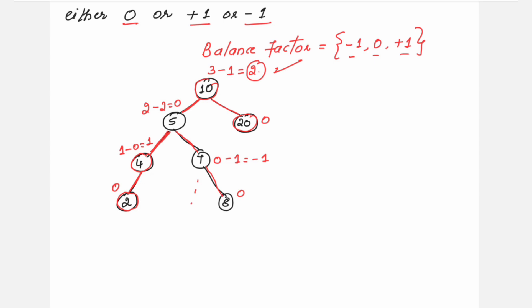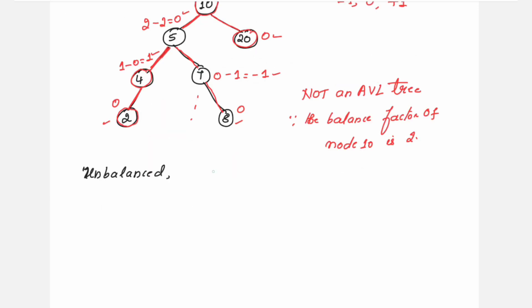Looking at this tree: for node 2 it is 0 — acceptable. For node 8 it is 0 — acceptable. For node 7 it is minus 1 — acceptable. For node 5 it is 0. For node 20 it is 0. When you see a tree wherein a node does not have a balance factor of minus 1, 0, or plus 1, you need to balance the tree. This tree is not an AVL tree because the balance factor of node 10 is 2 — the tree is unbalanced.